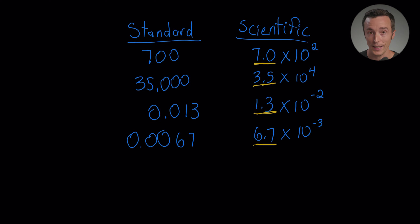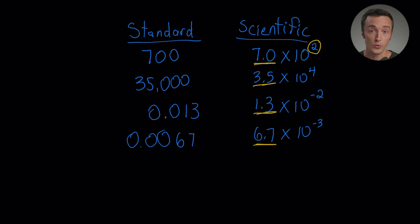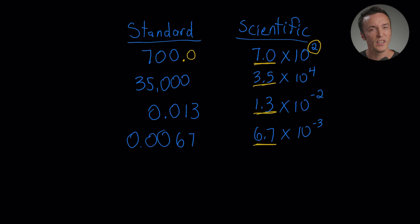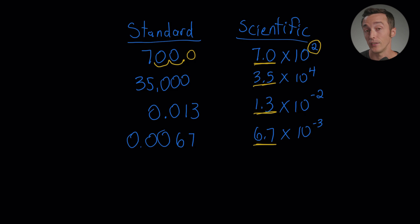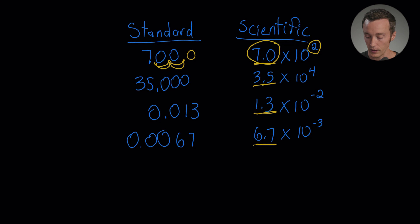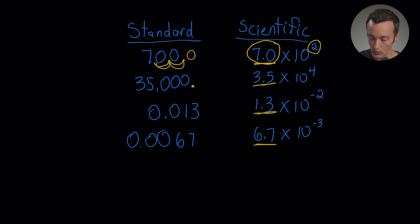The number always has a times 10 to some power, and whatever that exponent is — like two in the first example — it tells you how many spaces you need to move the decimal point to get the standard form equivalent. For example, 700 is really 700.0, and we had to move the decimal point two places to represent it as 7.0, so we write an exponent of two.